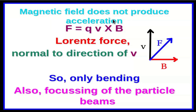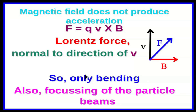A magnetic field cannot produce acceleration in the sense that the energy of particles cannot be increased. The Lorentz force acting on the particles due to the magnetic field is F = QV cross B, which means the force is perpendicular to both the velocity and the magnetic field. Therefore, the magnitude of the velocity cannot be changed — only bending or deviation of particles from the incident direction is possible. However, magnetic fields can be used to focus particle beams, precisely because this force is normal to the direction of velocity.